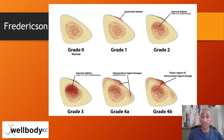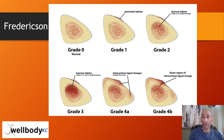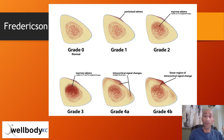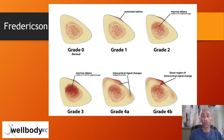Frederickson came up with a grading scale for stress reactions and stress fractures. Grade 0 is normal and grade 4b shows the stress reaction with a fracture line. While this grading can be important for doctors communicating with other doctors and therapists, for the patient the grade probably doesn't matter much — the treatment is very similar across all of them.